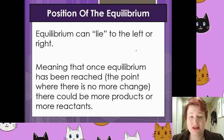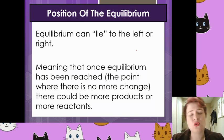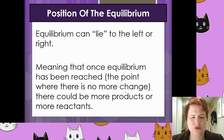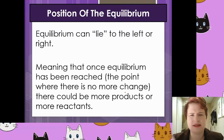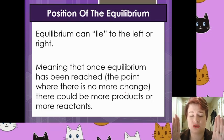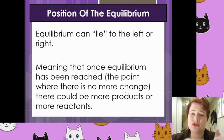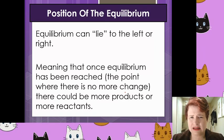The position of equilibrium in a reaction can lie to the left or to the right — either to the left-hand side where the reactants are, or the right-hand side where the products are. Students often think of the forward and backward reactions happening in separate containers, but they're not. Everything is happening at the same time in the same block of space.